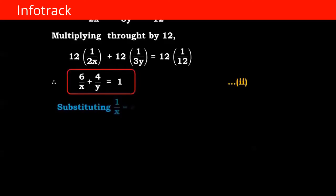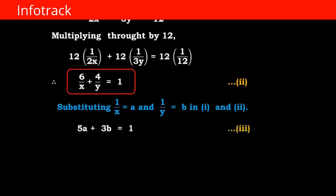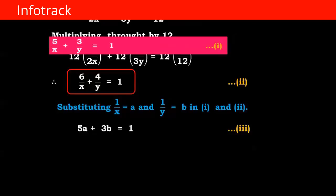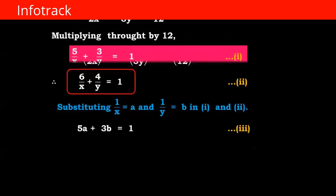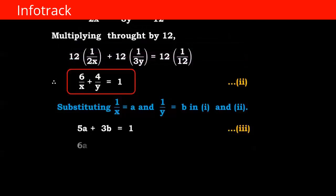Now substituting 1 upon x equals a and 1 upon y equals b, we get 5a plus 3b equals 1 — equation number 3 — and 6a plus 4b equals 1 — equation number 4.